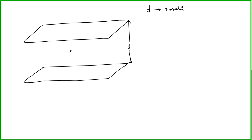The top plate is positively charged with a surface charge density of sigma, while the bottom plate is negatively charged with a surface charge density of negative sigma. Our goal is to find the electric field at a point in between the plates. To do this, let's first focus on the electric field for one of the plates.